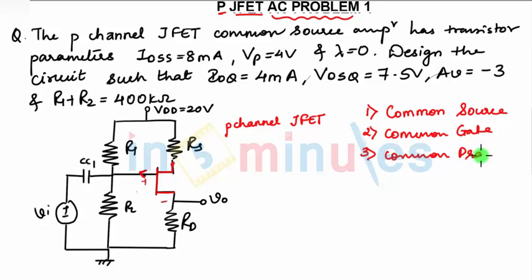Now how to identify which configuration it belongs? Look at the input port. When you look here, Vi is applied to which terminal? You can see this is your gate, this is your source, and this is your drain. Input is applied to the gate, so we can see input to gate. Output we are taking from drain.